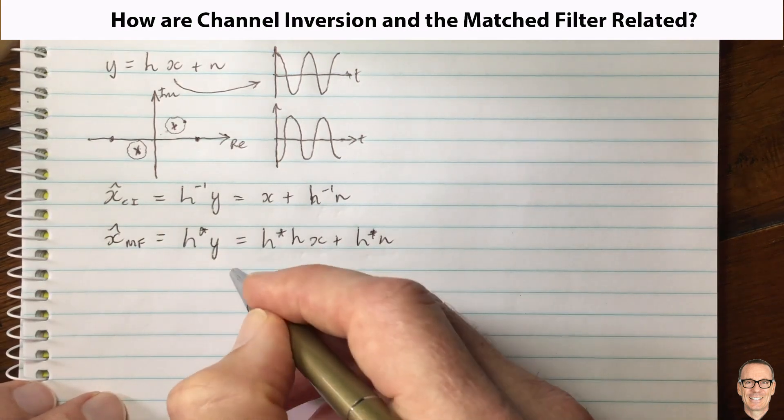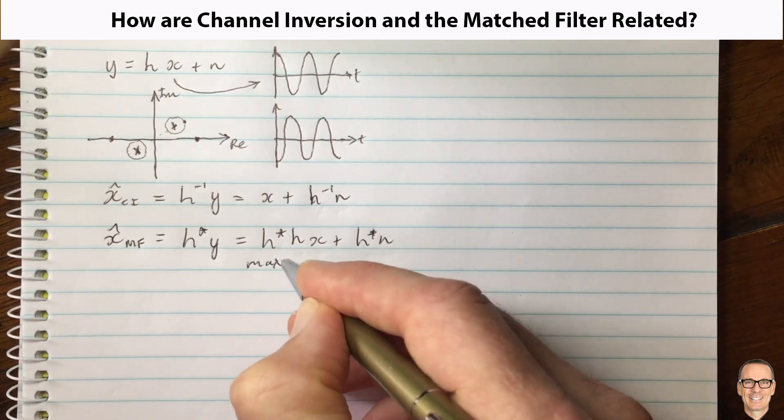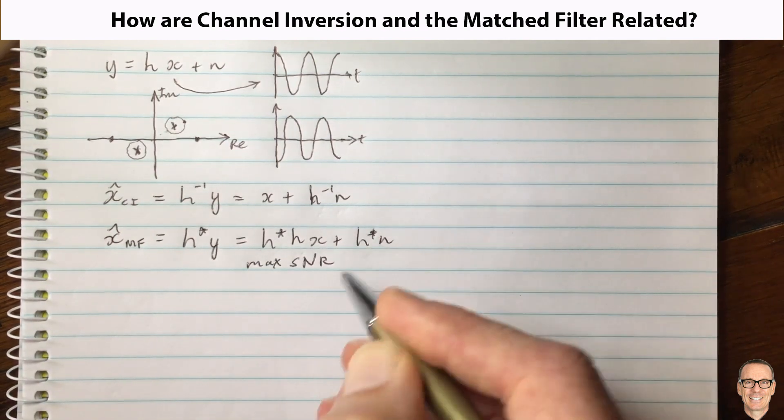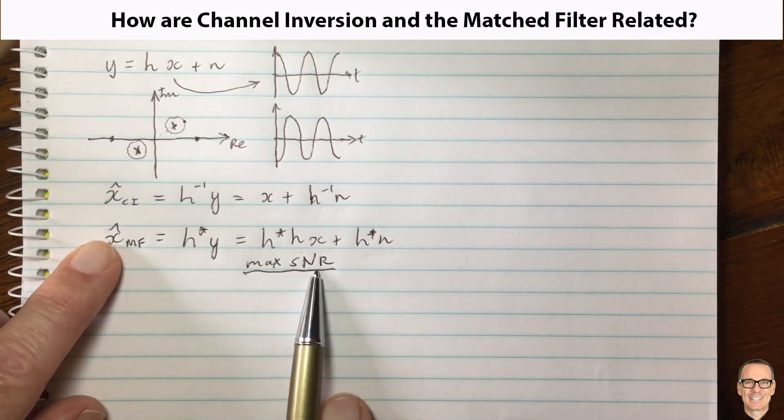And what the property of this is, is that if you do it this way, it maximizes this signal to noise ratio at the receiver. So the matched filter maximizes the signal to noise ratio.